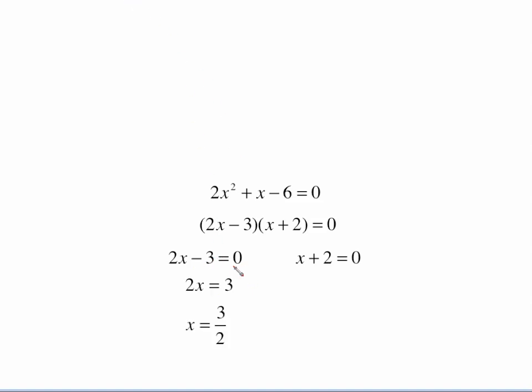So adding 3 to both sides is what gives me 2x equals 3, and then solve this by dividing both sides by 2. We get the x alone, and we have x equals 3 halves. Over here, x plus 2 equals 0 is pretty easy to solve. All we need to do is subtract 2 from both sides.